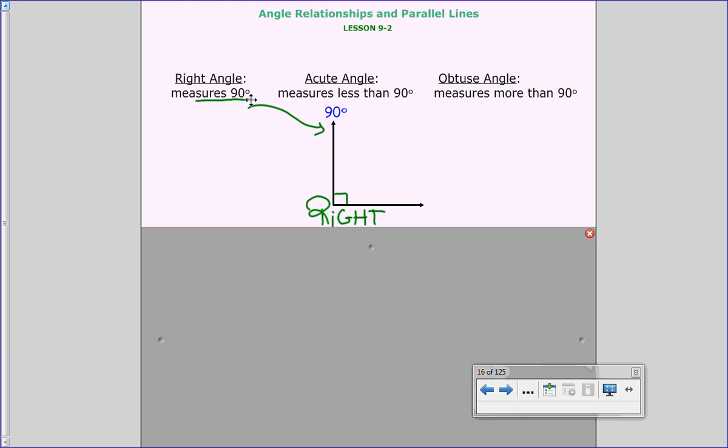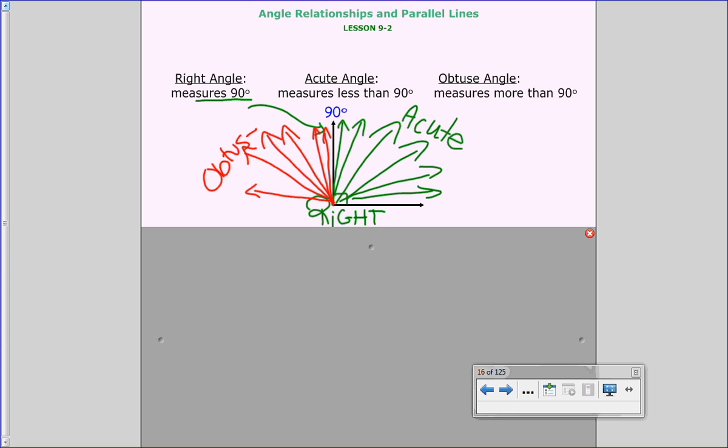Now when we talk about acute angles those are measures that are less than 90 degrees. So if it was like that or like that or anything like that, anything less than it. It could even be 89 degrees and it's still considered acute. Now if this angle where it's at 90 degrees right now is bigger than 90, so it goes like this or like that, it's considered obtuse, because it's greater than 90 degrees.